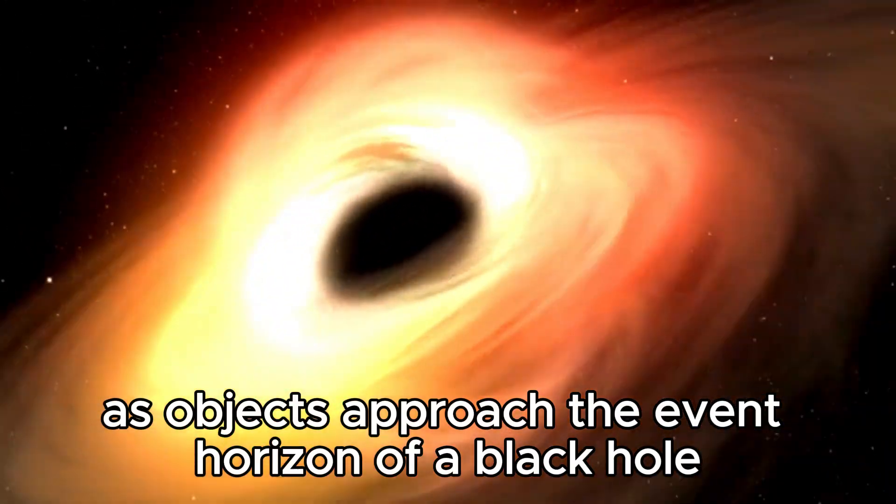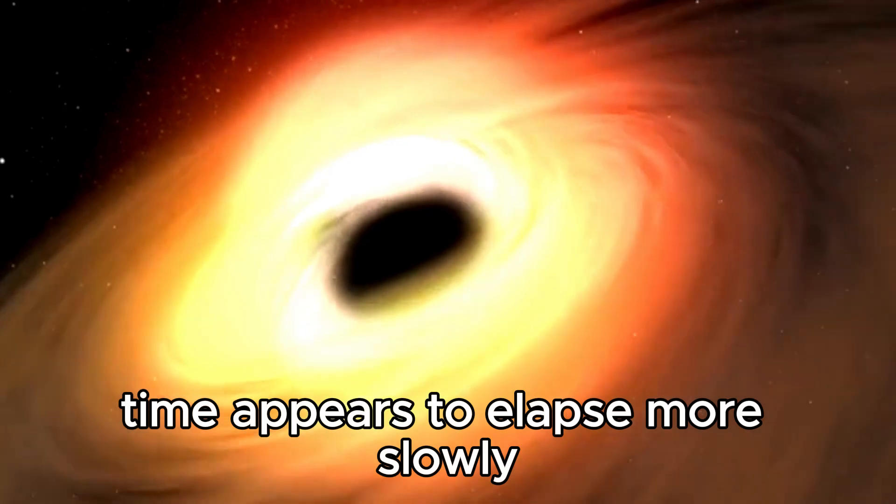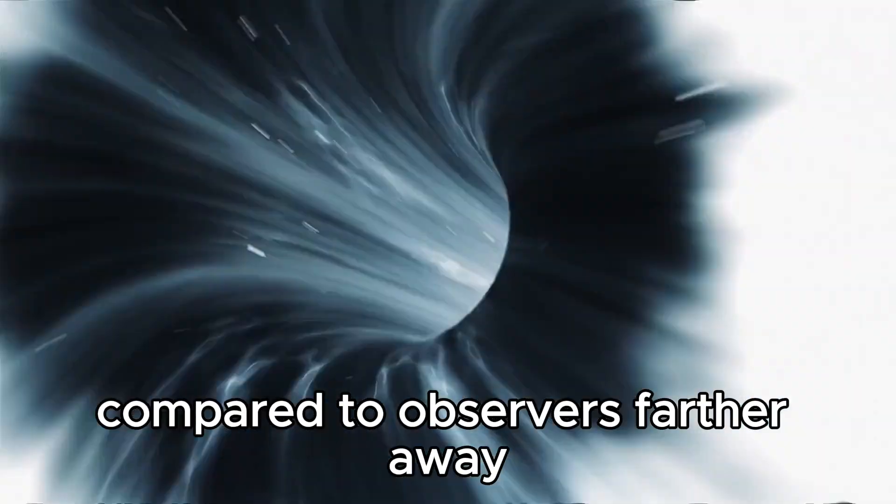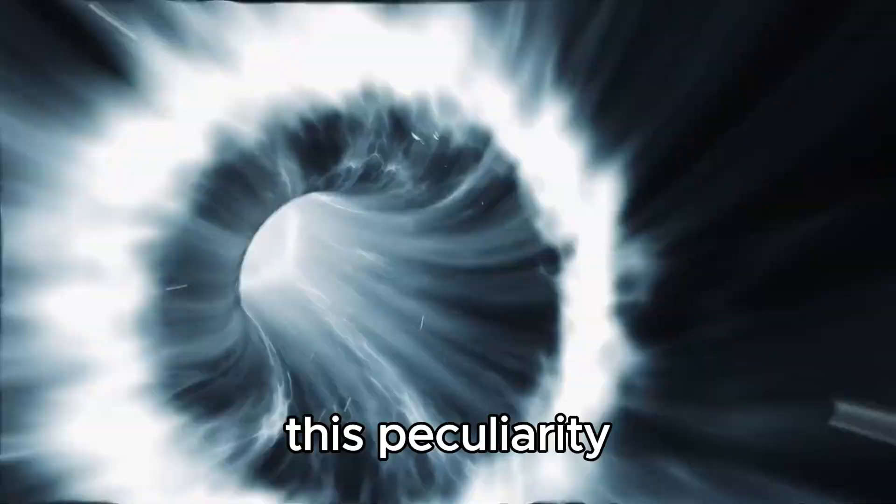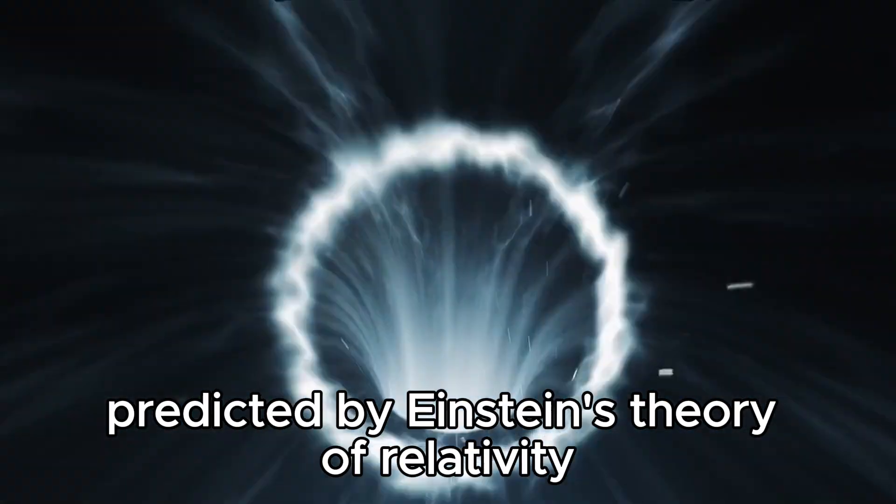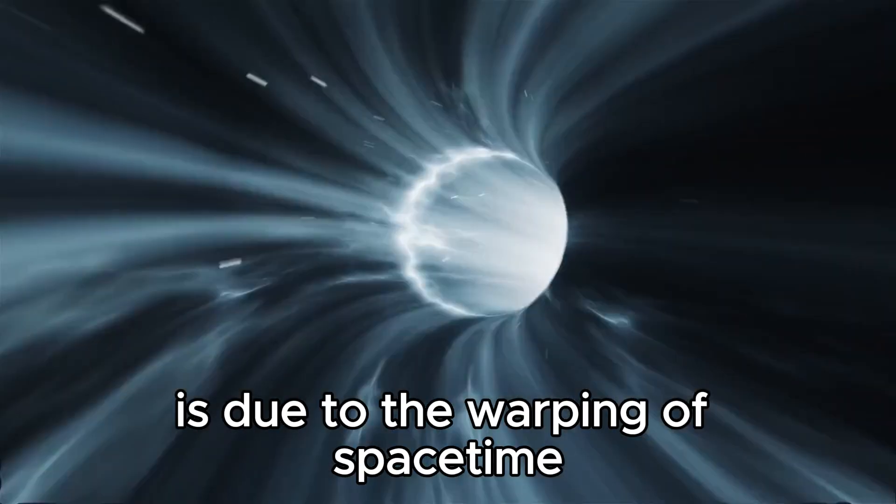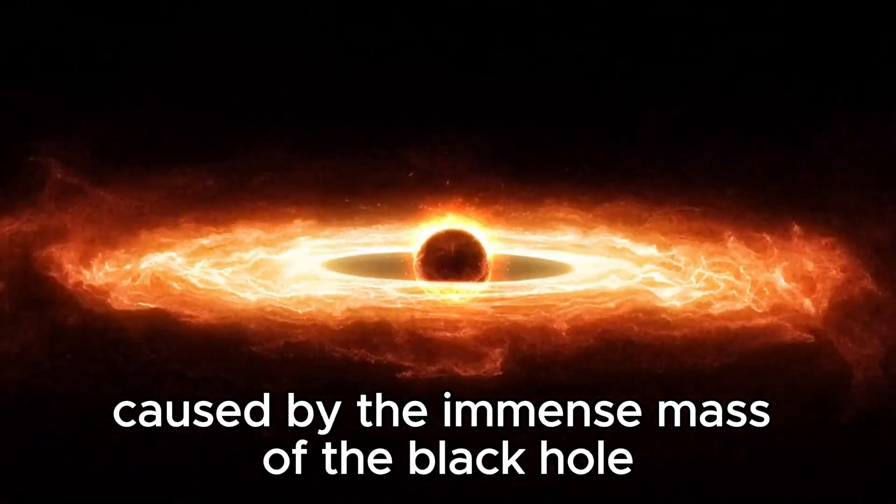As objects approach the event horizon of a black hole, time appears to elapse more slowly compared to observers farther away. This peculiarity, predicted by Einstein's theory of relativity, is due to the warping of spacetime caused by the immense mass of the black hole.